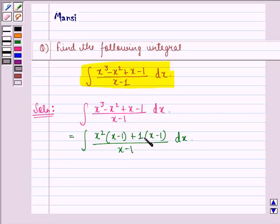So this can be written as the integral of (x² + 1)(x - 1) divided by x - 1, dx.